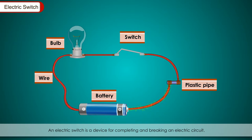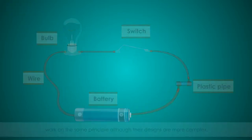Electric switch: An electric switch is a device for completing and breaking an electric circuit. When the path for the flow of current is complete, the switch is said to be on. When the path is incomplete, the switch is said to be off. A switch has two states: open or closed. When the switch is open, no current can flow through it. When a switch is closed, current flows through it. The main purpose of a switch in a circuit is either to break the circuit or to complete it. The switches used in lighting of electric bulbs and other devices in our homes work on the same principle, although the designs are more complex.